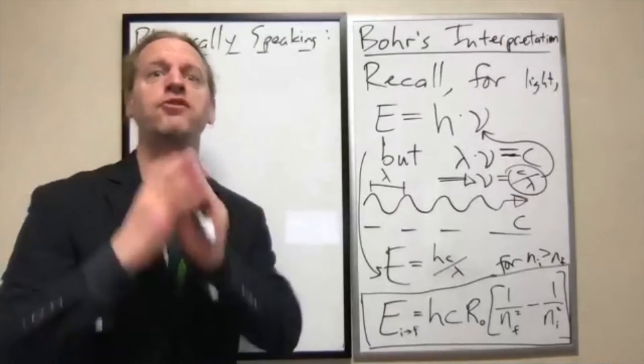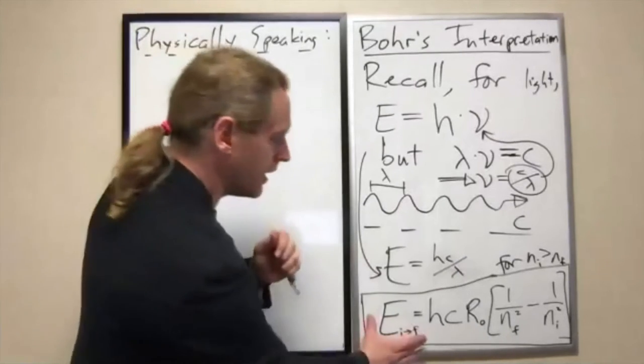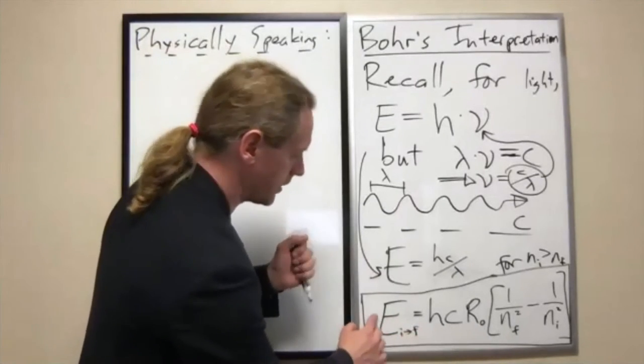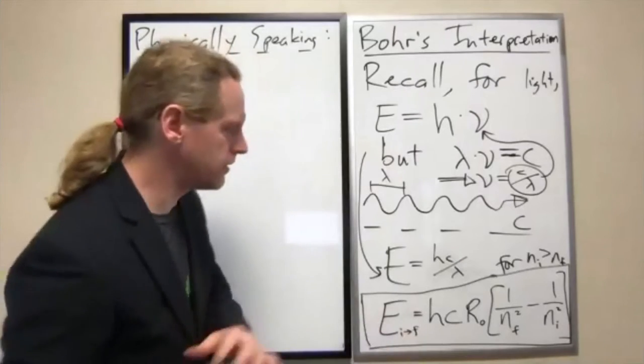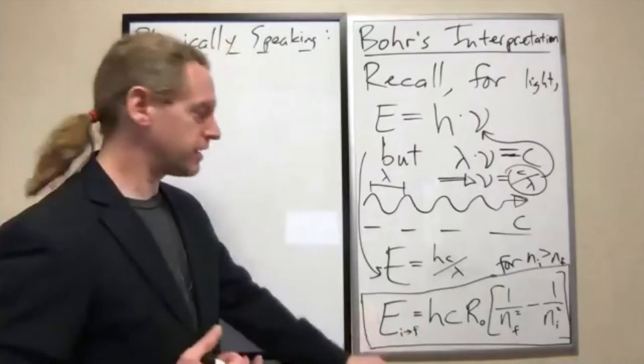If it has some change in energy delta E, this delta E is exactly what it's going to gain or lose. So which thing is the delta E going from I to F?